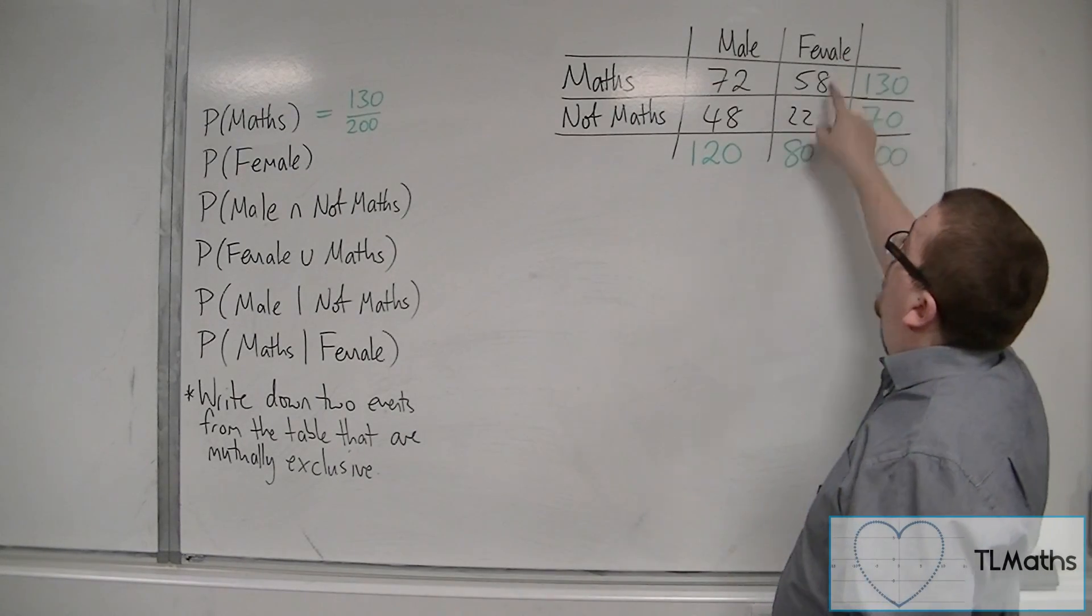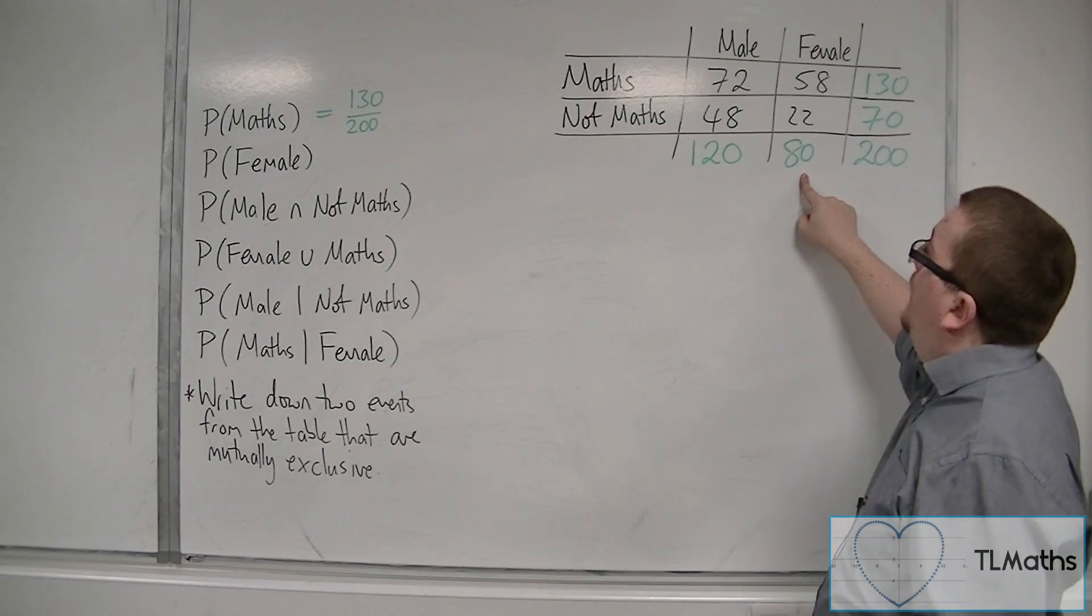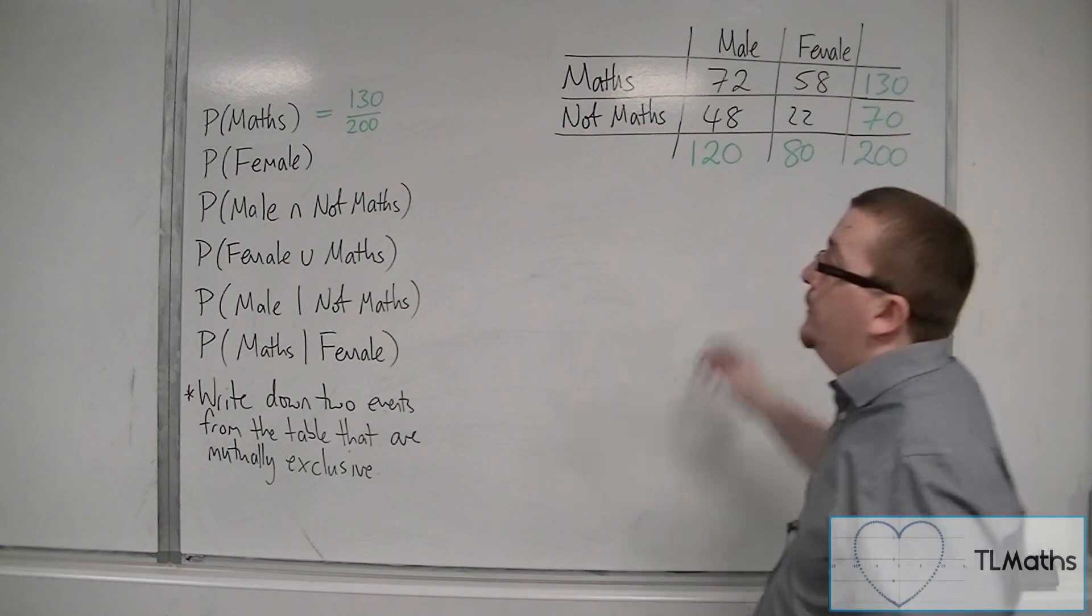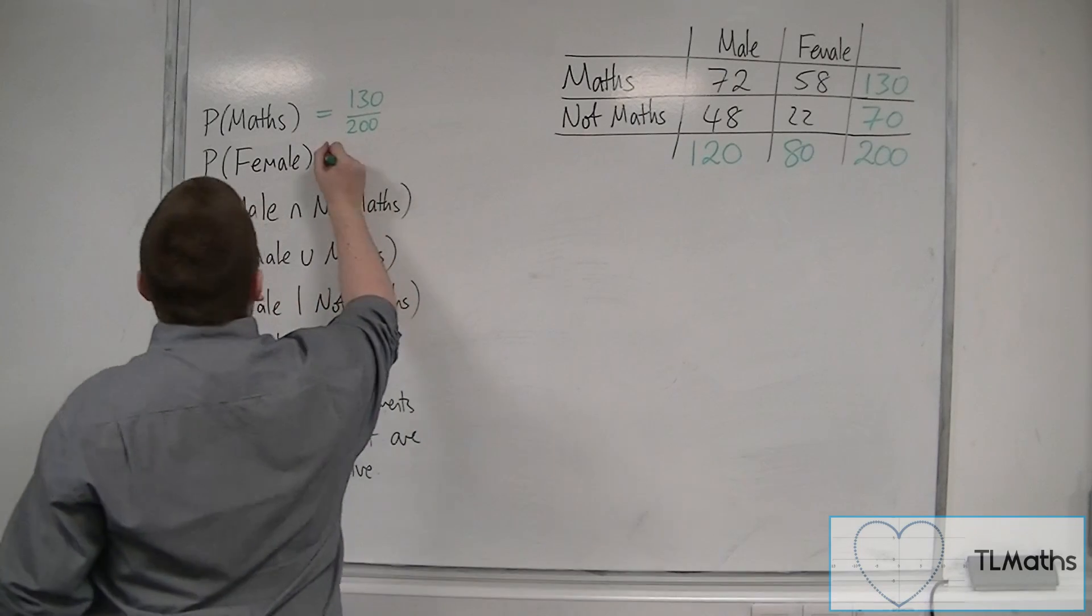Now the probability of a student being female, well there are 80 female students out of 200 students. And so 80 over 200 is that probability.